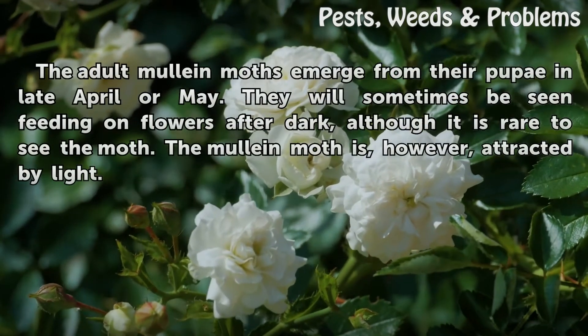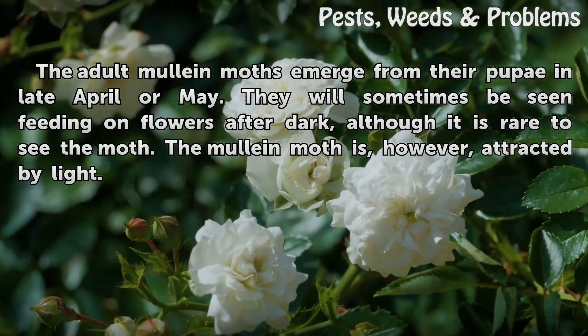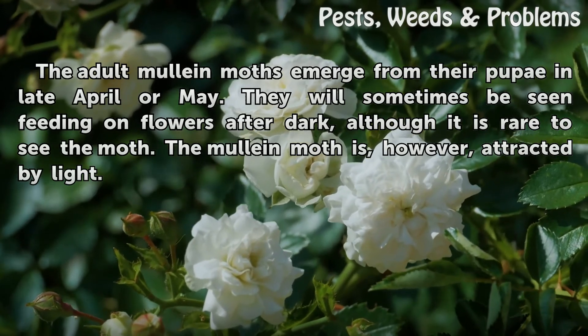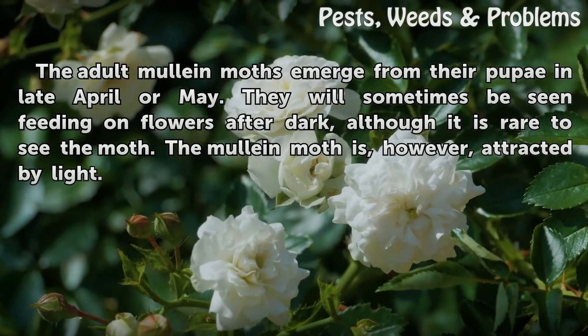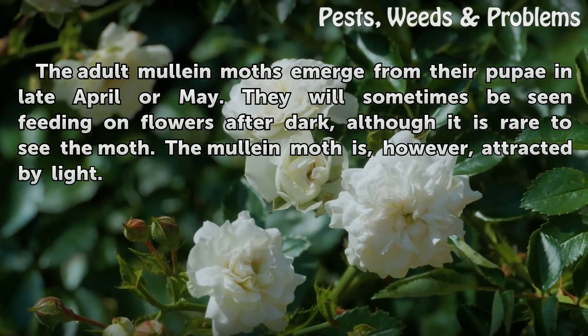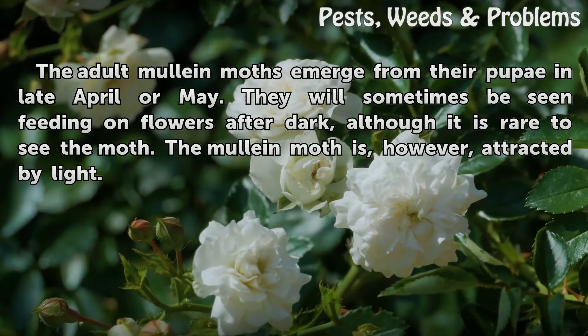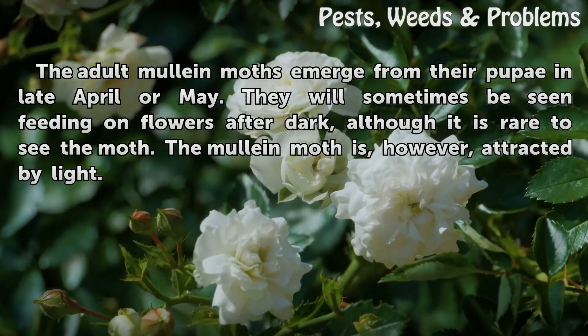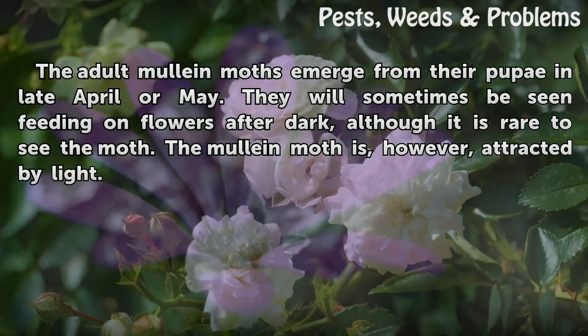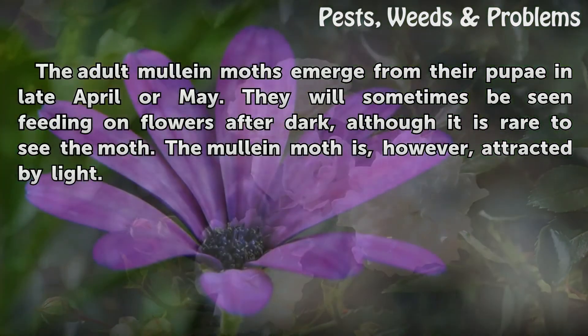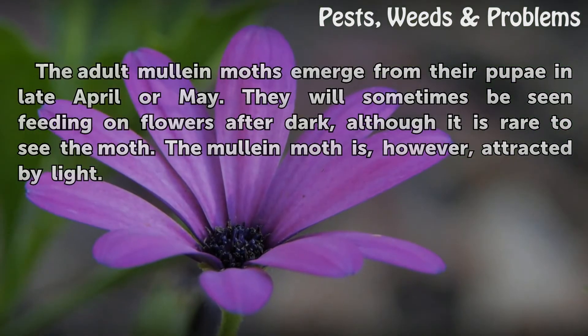The adult mullein moths emerge from their pupae in late April or May. They will sometimes be seen feeding on flowers after dark, although it is rare to see the moth. The mullein moth is, however, attracted by light.